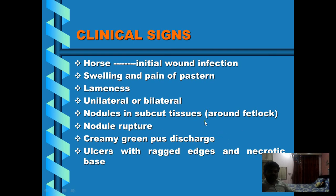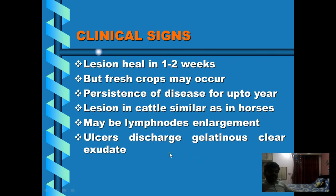Nodules in the subcutaneous tissue are present; they grow and become visible, initially around the fetlock. When these abscesses mature, the nodules rupture and there is oozing of creamy greenish pus discharge from the lesions. The ulcers on the limbs have a necrotic base. Lesions usually heal in one to two weeks if proper hygienic conditions are maintained, but fresh crops of new lesions may develop. The disease may persist for up to 12 months.